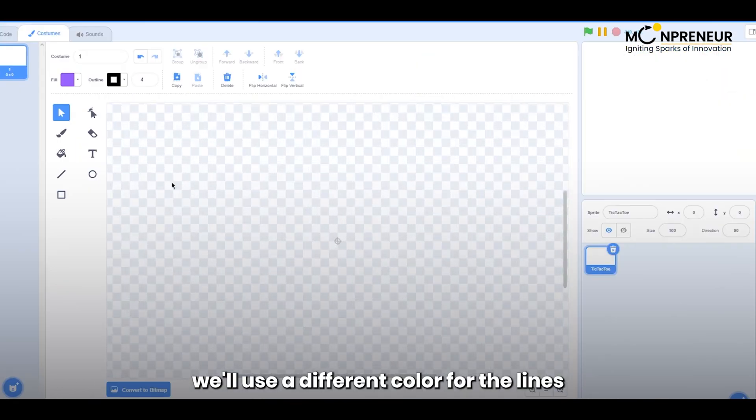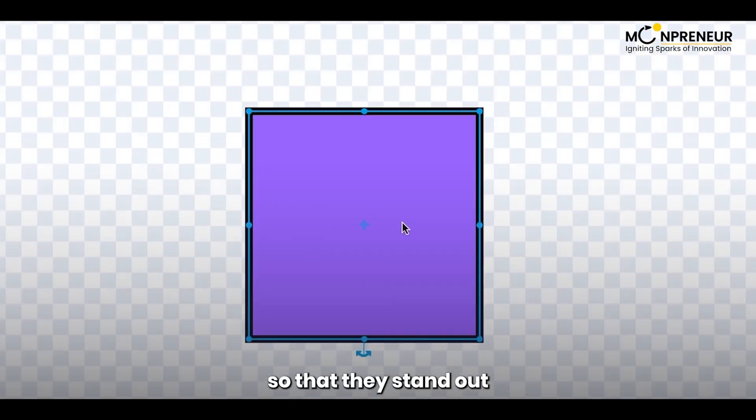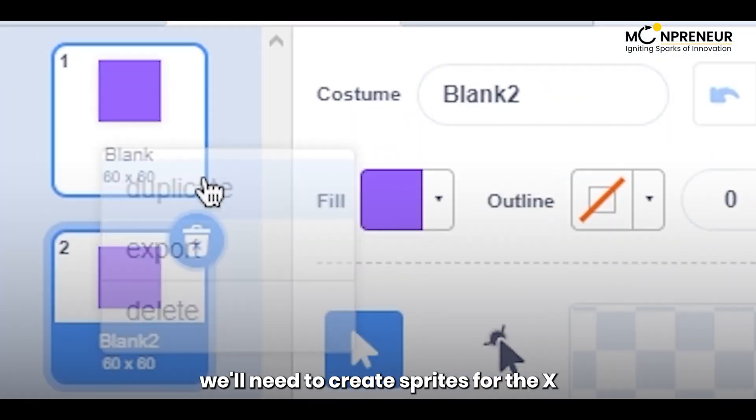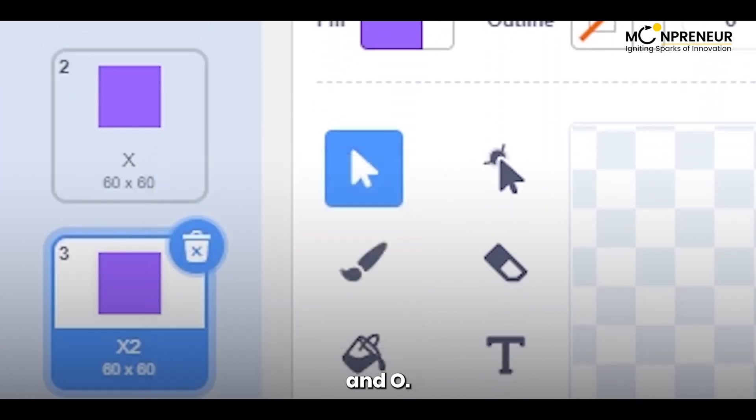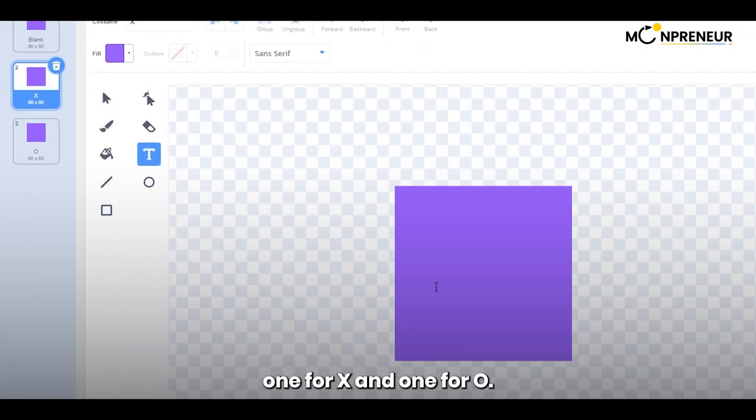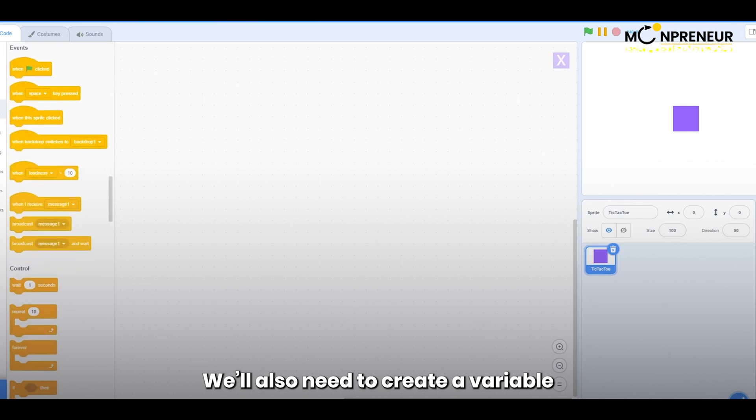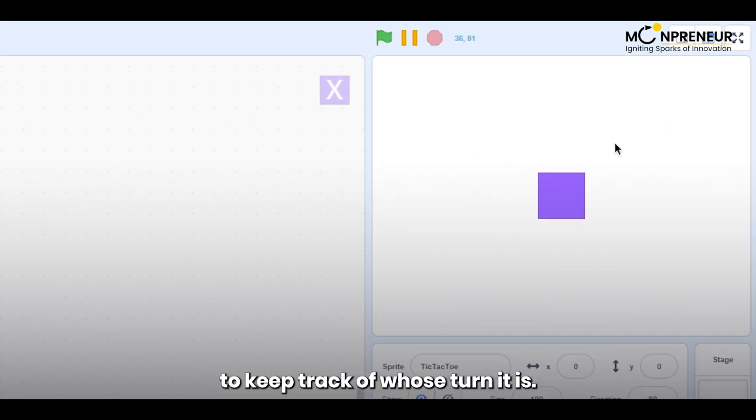Then, we'll use a different color for the lines so that they stand out from the background. Once we have the grid set up, we'll need to create sprites for the X and O. We'll use two different sprites, one for X and one for O. We'll also need to create a variable to keep track of whose turn it is.